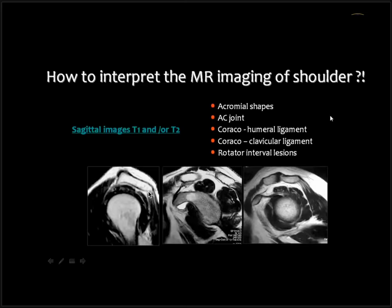On sagittal sections: the acromion shape allows us to apply the Bigliani classification — type 1 is flat inferior, type 2 is curved concave inferior, type 3 is hooked inferior, type 4 is convex inferior. We can see all the muscles: supraspinatus, infraspinatus, teres minor, and subscapularis. We can see the coracohumeral ligament, superior glenohumeral ligament, middle glenohumeral ligament, and inferior glenohumeral ligament. We can also talk about acromioclavicular osteoarthritis, and subcoracoid bursa and subscapularis bursa.